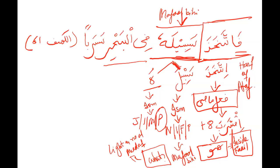Is there any relation between huw and fee? No — not possible. So our mafulbihi bucket has ended. Now what is fee? Harf of jar. And al-bahri — is it an ism or a fail? Analyze it: jar, singular, masculine. What is this? Majroor. Yes, it's majroor. And what will it be? MBF — mutalliq bil fail. Your MBF bucket is there.